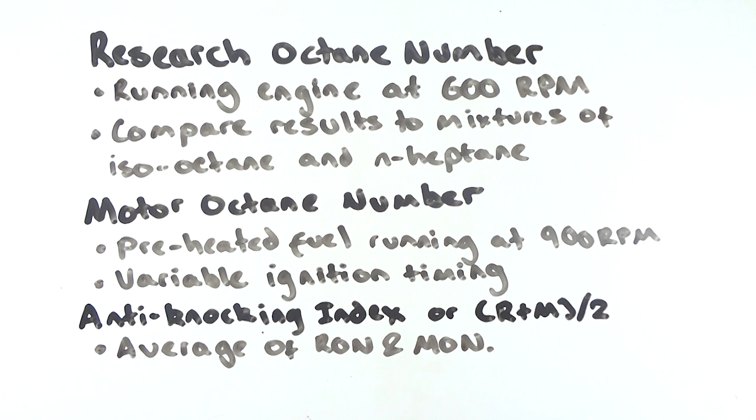RON basically simulates acceleration behaviour, while MON is similar to driving a car on the highway. The anti-knocking index, which I mentioned next to US gas numbers, is calculated through averaging RON and MON, which is why if you are in the USA you might tend to see R plus M over 2 on the fuel pump, this merely meaning RON plus MON averaged.